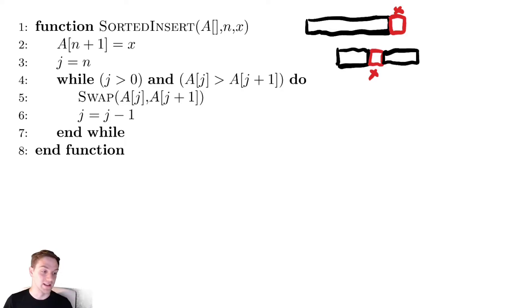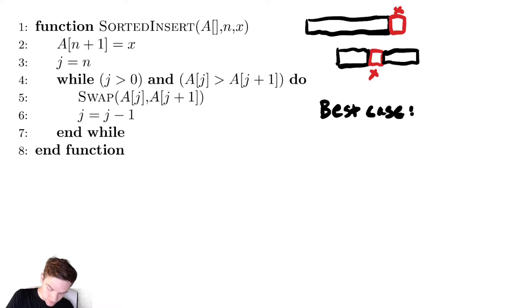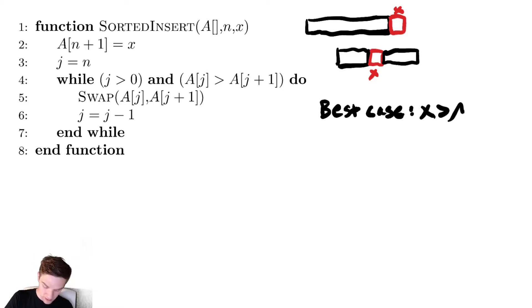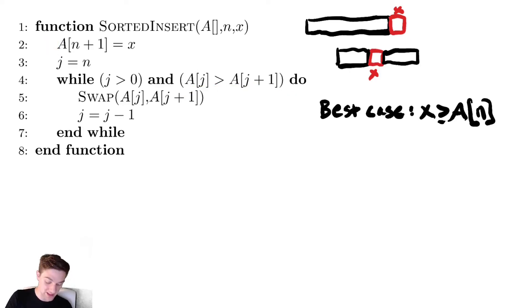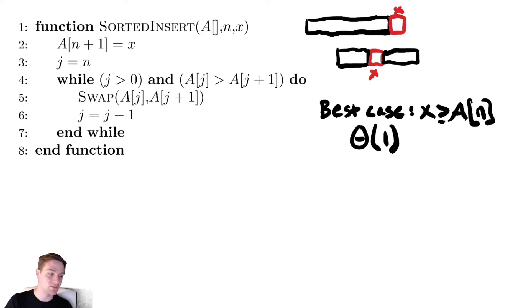Now let's analyze this. There are several different cases to consider: the best case and worst case. The best case is that the element we're adding is greater than everything in the array — specifically greater than a[n]. Since it's already in sorted order as long as it's greater than the maximum element, we don't need to do anything. That if statement is never qualified, so the best case runtime is Θ(1), just constant time operations for appending.